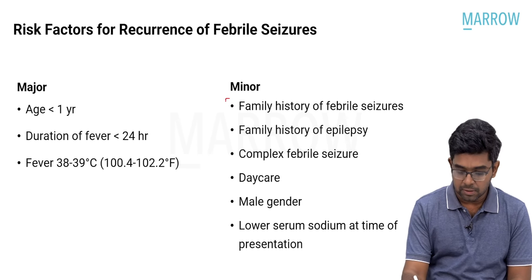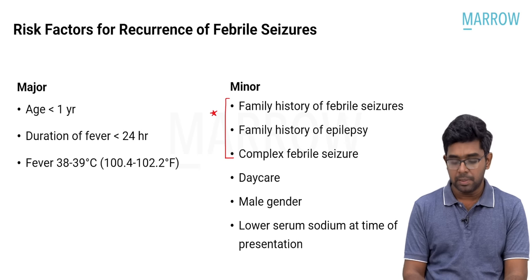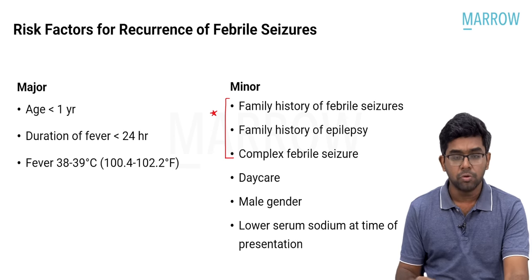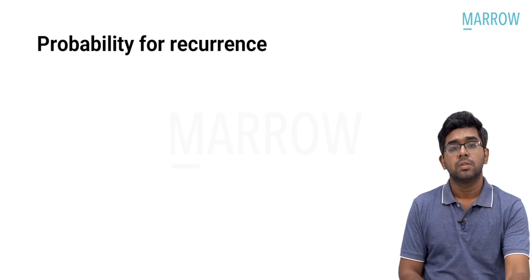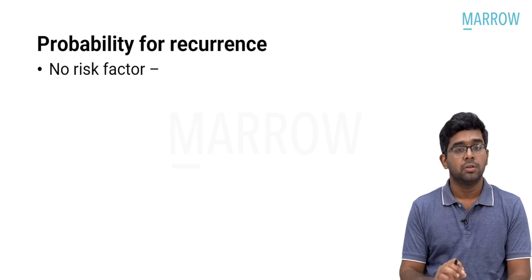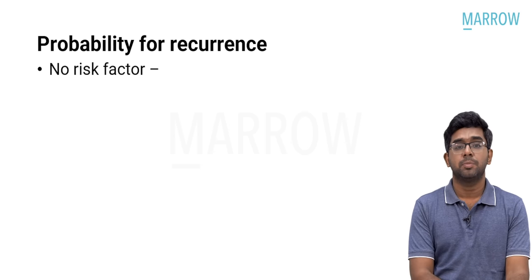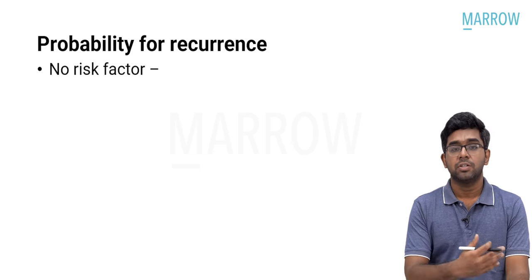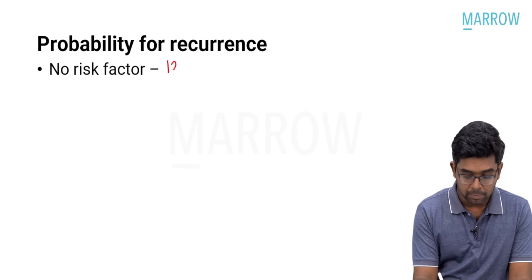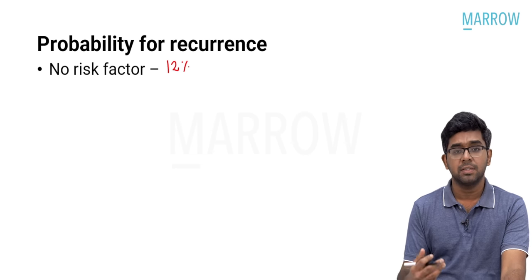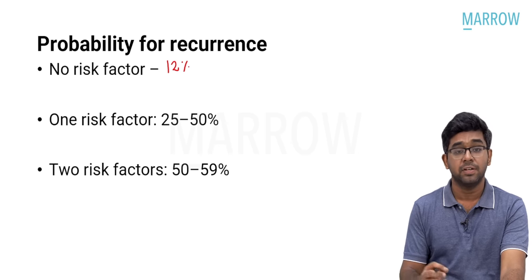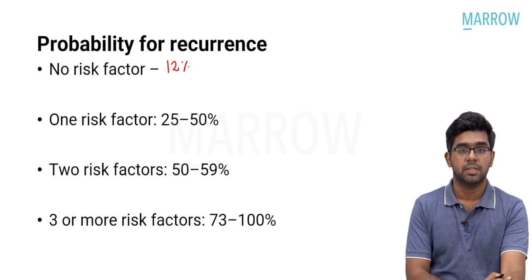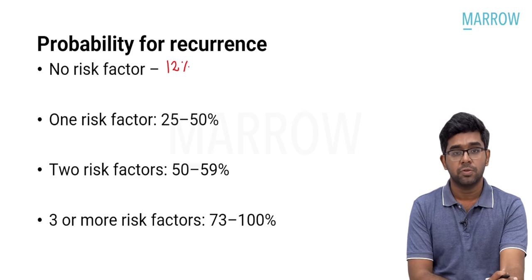Out of the minor risk factors, family history of febrile seizures or epilepsy and complex febrile seizure are the most important. An extension question: even without any risk factors, a febrile seizure child has a 12% probability of recurrence. With one risk factor, probability is 25 to 50%. With two risk factors, 50 to 59%. With three or more risk factors, it can touch up to 100%. This is an important extension for future exams.